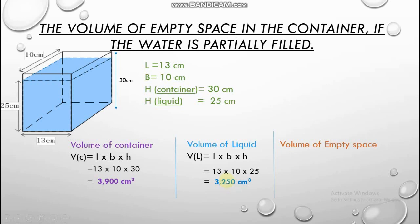Now come to the last step which is the volume of empty space. We need to just subtract volume of liquid from volume of cuboid. So we will get the volume of empty space which is 650 cubic cm.